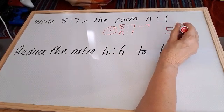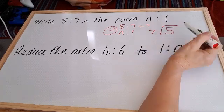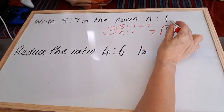So let's do that here. 5 divided by 7. 7 into 5 does not go.